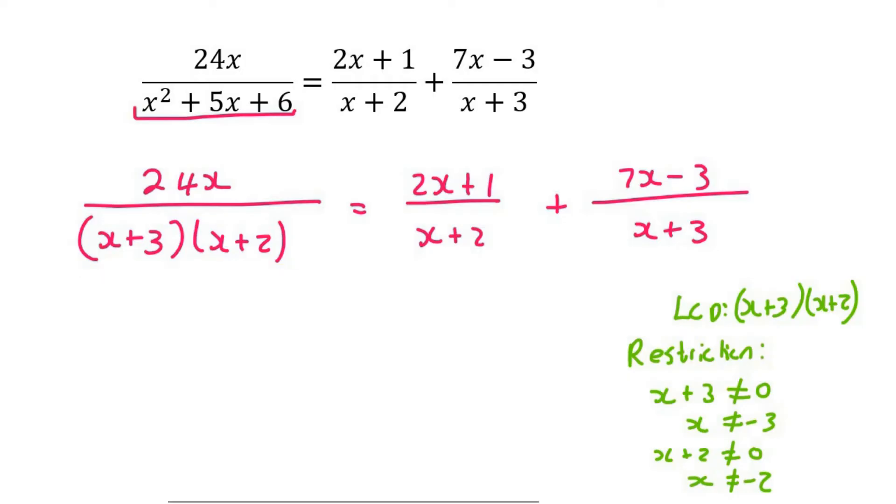Okay, so now we need to get the denominators to all be the same. This whole part actually needs to be multiplied by x plus 3, and this whole part needs to be multiplied by x plus 2. So that's going to look like this: we're going to have 24x over (x+3)(x+2)